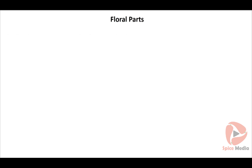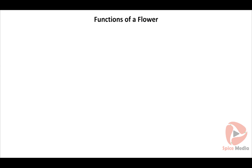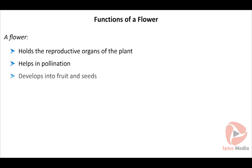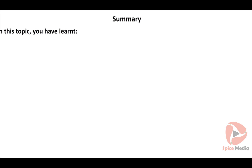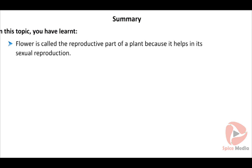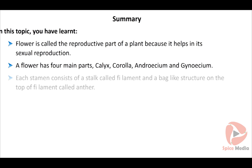The thalamus is the base of the flower on which floral parts are arranged in four whorls: Calyx, Corolla, Androecium, and Gynoecium. Functions of a flower: it holds the reproductive organs of the plant, helps in pollination, develops into fruit and seeds, and contains nectar which attracts insects. A flower also adds beauty to nature. Each stamen consists of a stalk called filament and a bag-like structure called anther.